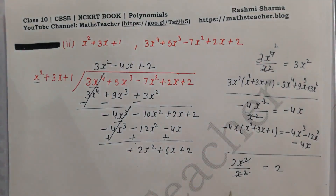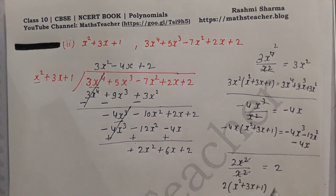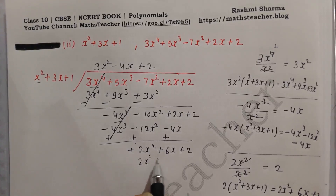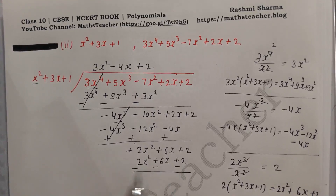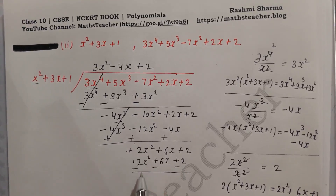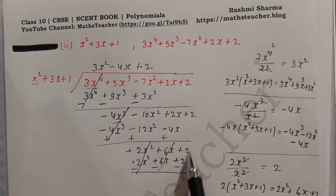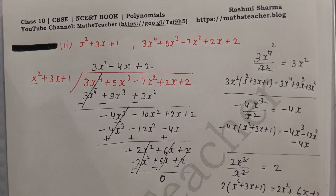Next we find the next quotient term. We divide 2x² by x², giving 2. We multiply 2 by the divisor x² plus 3x plus 1: 2 times x² is 2x², 2 times 3 is 6x, 2 times 1 is 2. We write 2x² plus 6x plus 2, then change signs: minus, minus, minus.